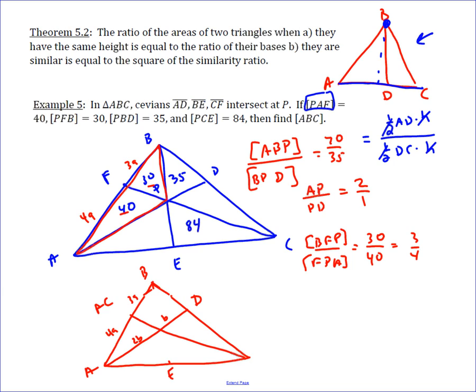So using mass points, if we give this guy, A, a mass of 3, then that means D would have a mass of 6, because 3 times 2 is 6, so 1 times 6, so B is 6. And then, if we have this as a mass of 3, then 3 times 4 is 12, so F must have a mass of 4, so here are our masses.